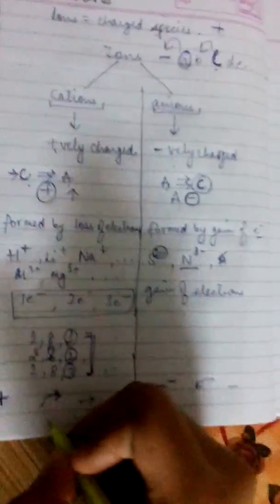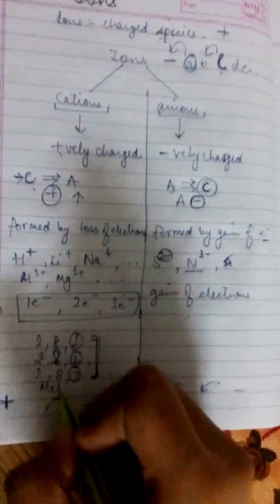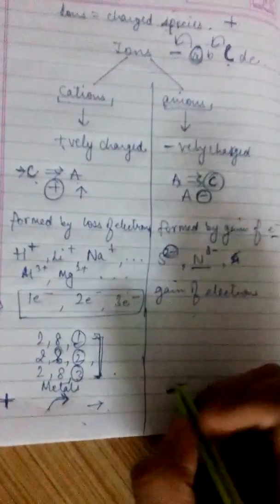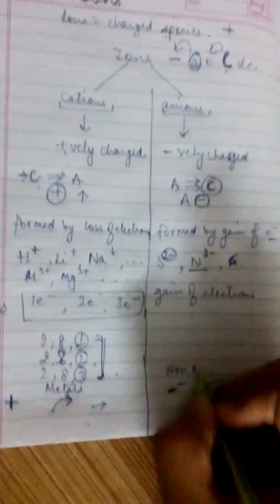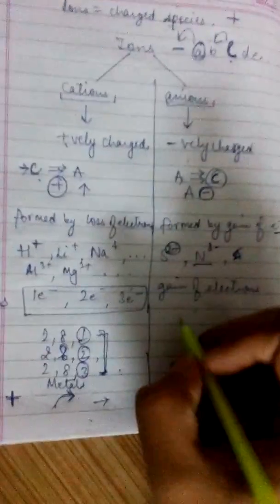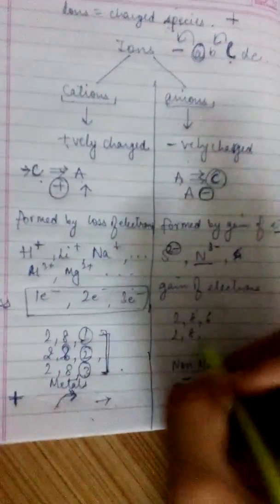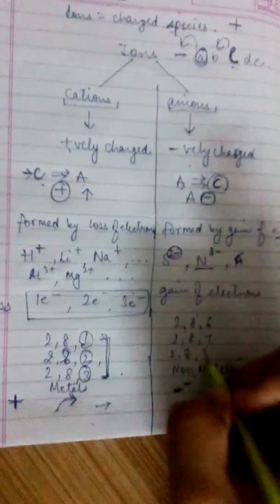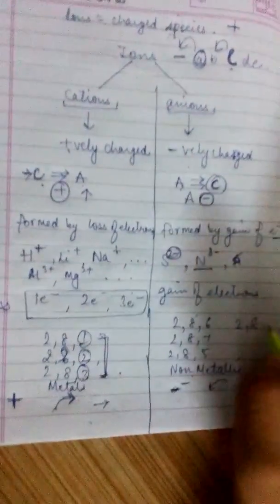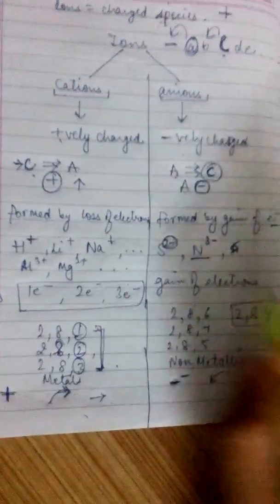Cations, they are formed by metals. Anions, they are non-metallic. They have 2, 8, 6, 2, 8, 7, 2, 8, 5, 2, 8, 4, like this.